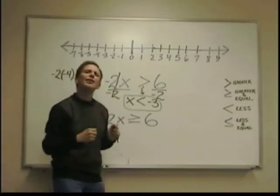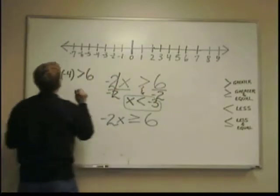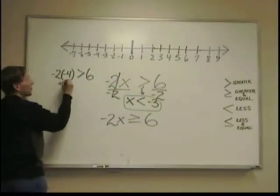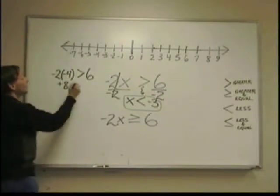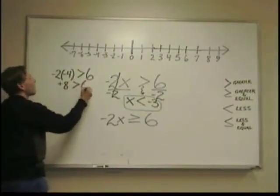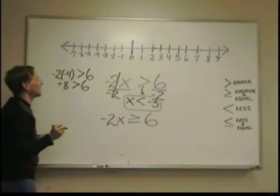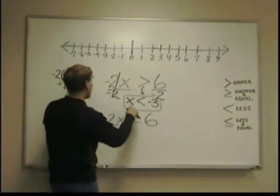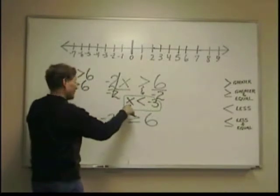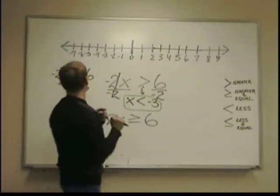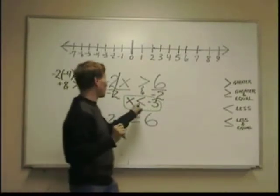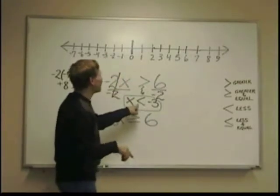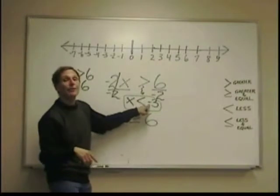When you check, you're going back to the original. Negative times negative is positive. So, negative 2 times negative 4 is a positive 8. And yes, positive 8 is greater than negative 6. So, my answer is true. x, when I substitute x, which I substitute a number of less than because I flipped, x is less than negative 3.